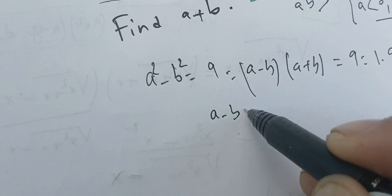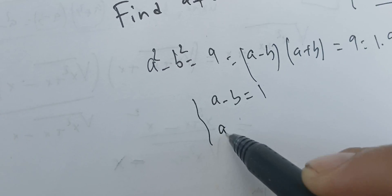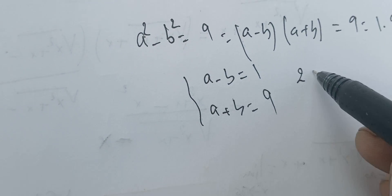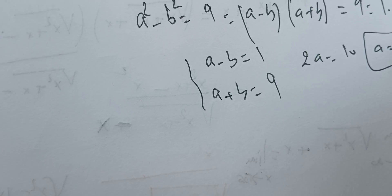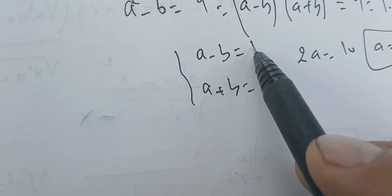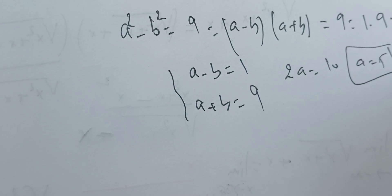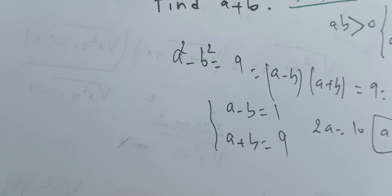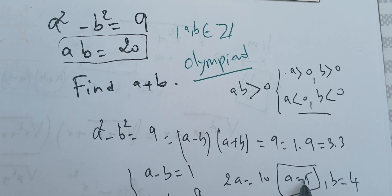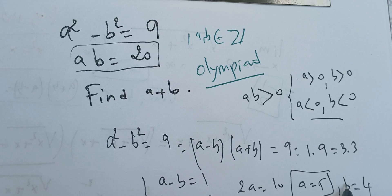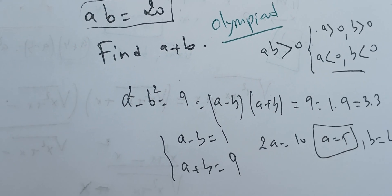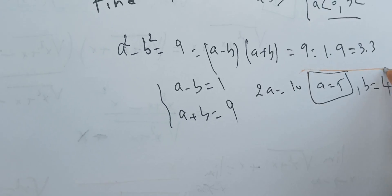First case: if a minus b equals 1 and a plus b equals 9, adding these two equations gives 2a equals 10, so a equals 5. Then 5 minus b equals 1, so b equals 4. We verify: a squared minus b squared is 25 minus 16 equals 9 ✓, and a times b is 20 ✓. So (a=5, b=4) is a valid solution.